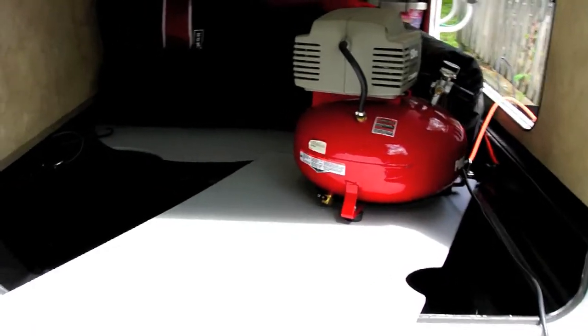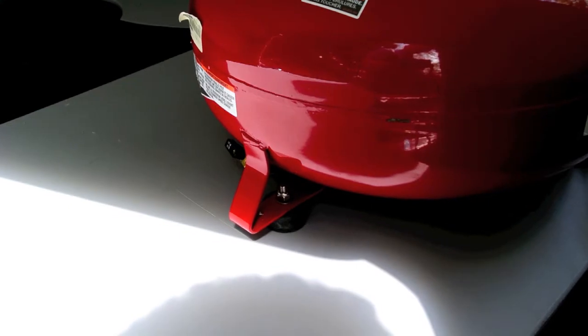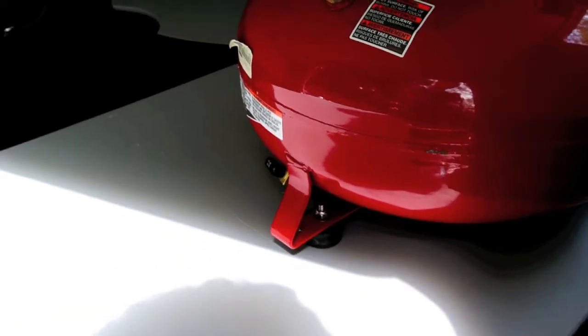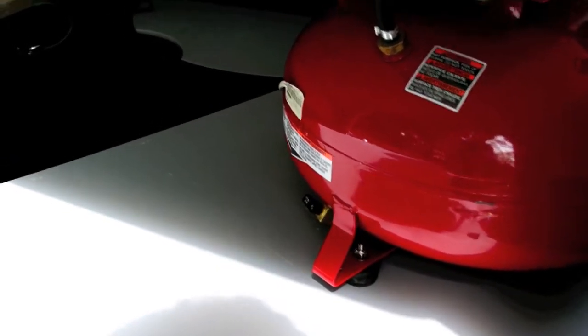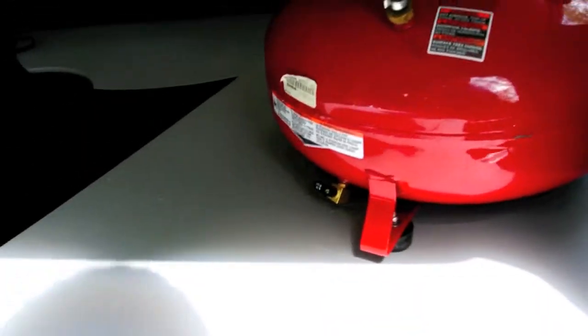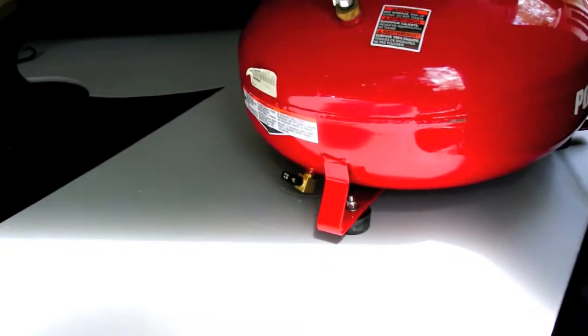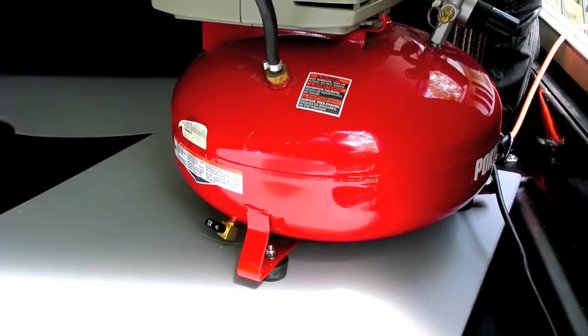Now we're getting ready to slide this in here. I got the bolts through here, and what I did is I used those captive nuts that have the nylon inserts, because you just want this to float on here. You don't really want to tie it down too tight because it might warp the plastic.